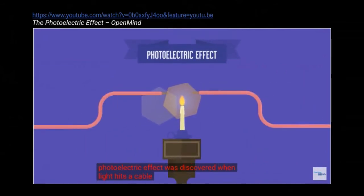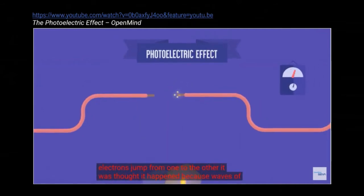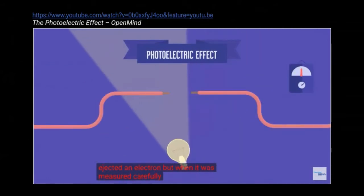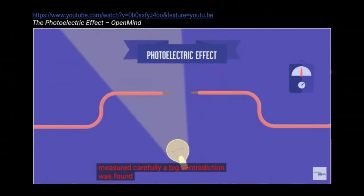When light hits a cable next to another cable, electrons jump from one to the other. It was thought it happened because waves of light made atoms vibrate until they ejected an electron. But when it was measured carefully, a big contradiction was found.